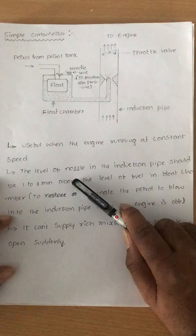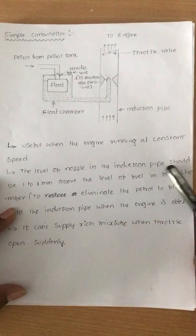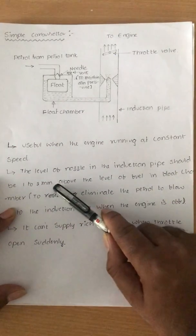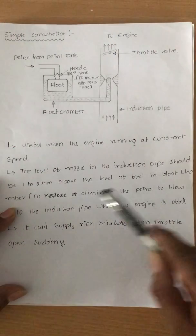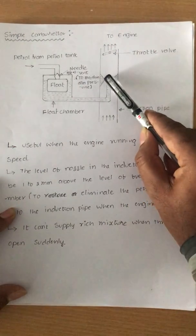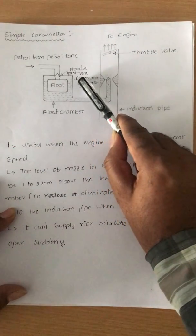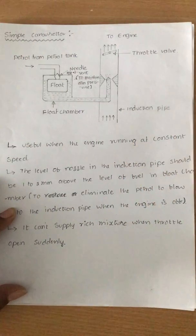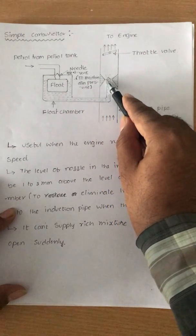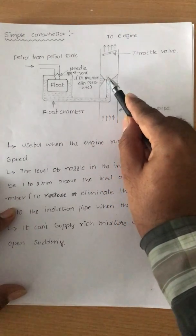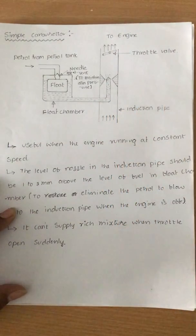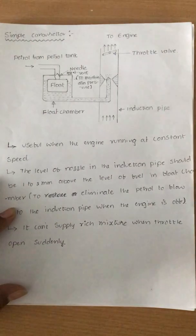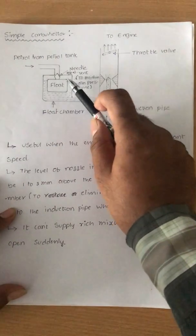The level is very important. The level of the nozzle in the induction pipe should be 1 to 2 mm above the level of fuel in the float chamber. This level is below the nozzle tip. The nozzle should be placed 1 or 2 mm above the fuel level in the float chamber.